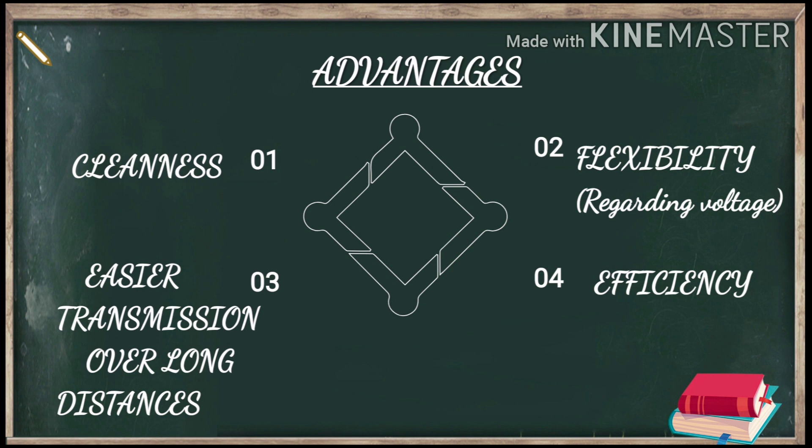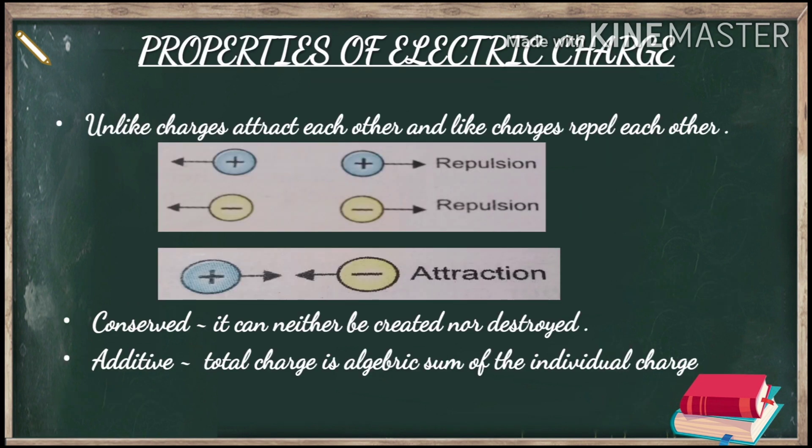The fourth point is efficiency — it is very efficient. For example, when I switch on the light, within one second the bulb glows. It doesn't take 5 minutes to glow; within seconds it glows, so that means it is a very efficient form of energy. Now to study electricity, we have to clear our basics.